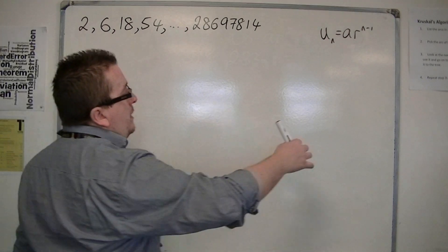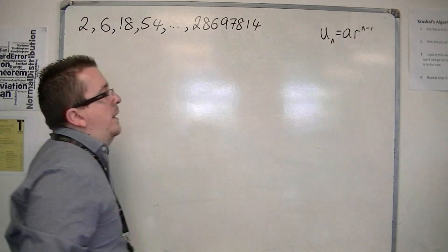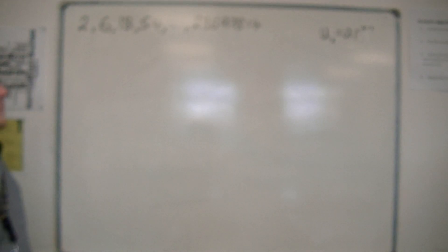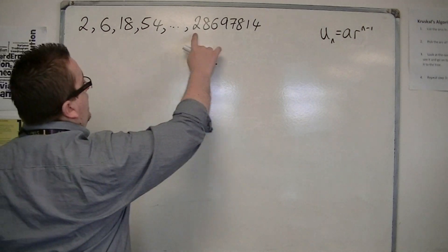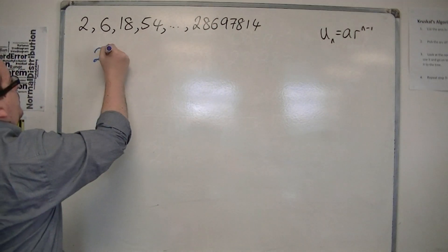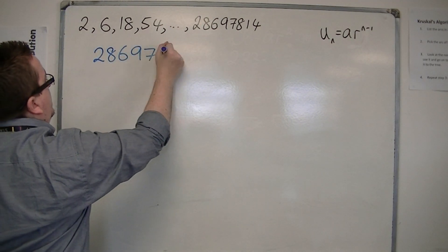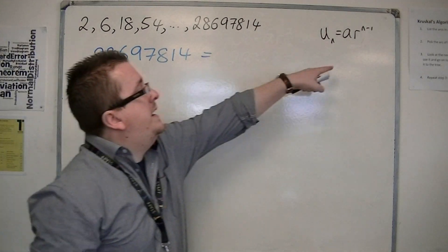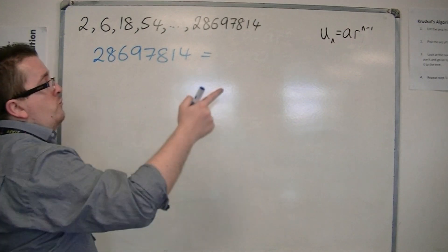So, we're going to use the nth term formulas we've been using in the previous videos, where we're identifying that this is the last term in our sequence, so 28697814, and that's equal to the first term, a, times the common ratio,